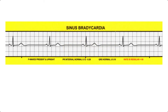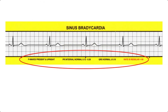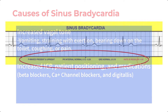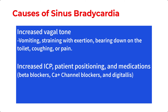In the case of a sinus bradycardia, all of our normal parameters are present except the SA node is discharging at a rate less than 60 beats per minute. Common causes of sinus bradycardia include increases in vagal tone, which can come from things like vomiting, straining with exertion, bearing down on the toilet, coughing, or just pain.